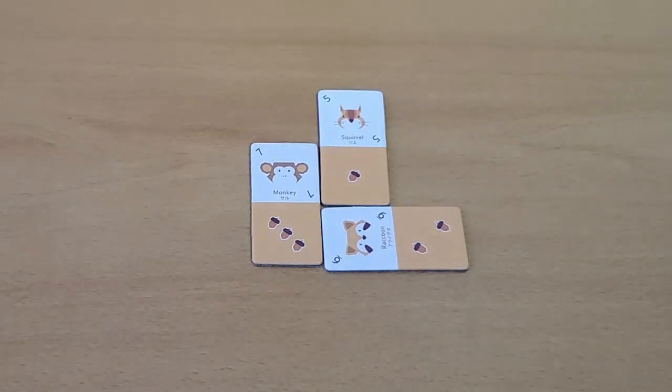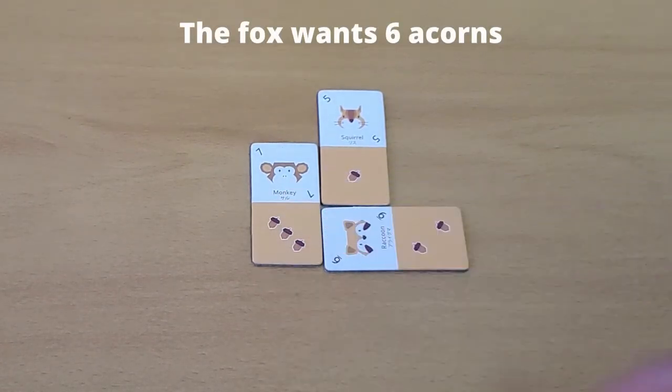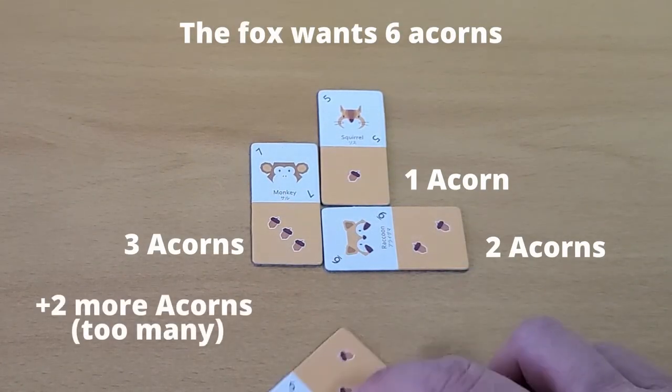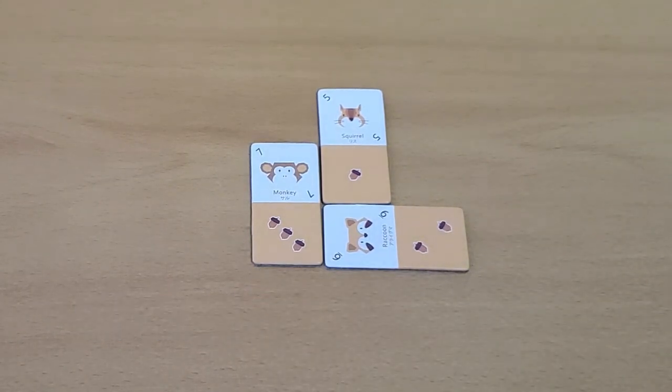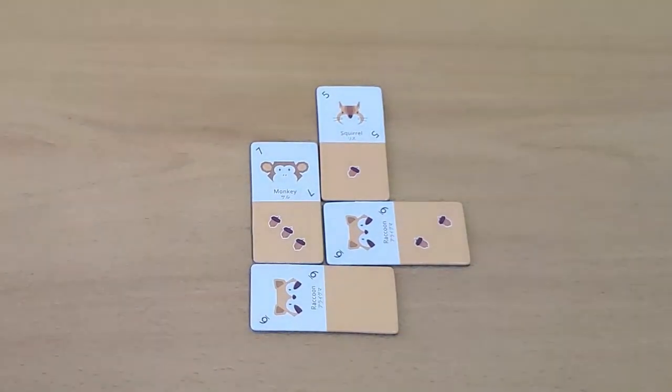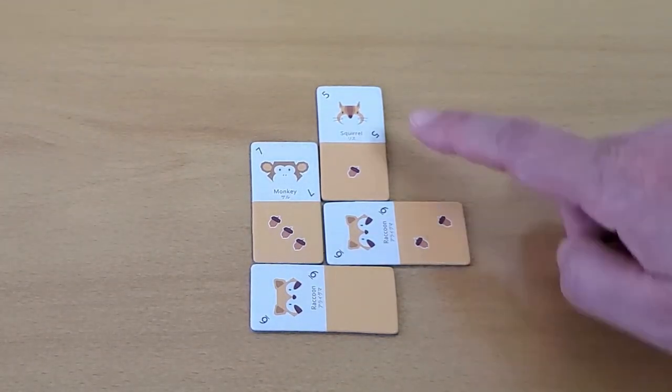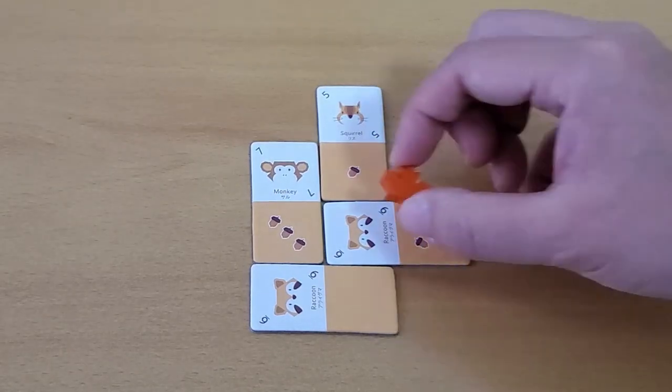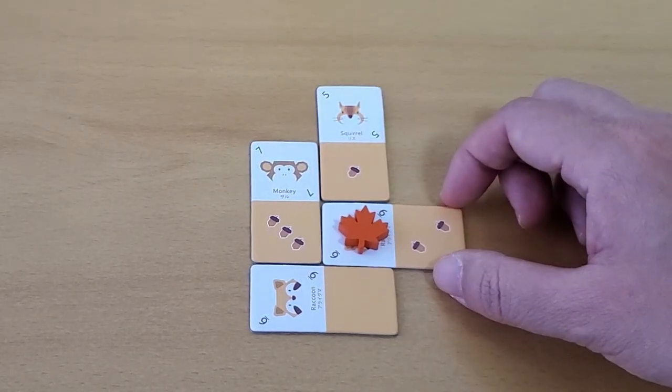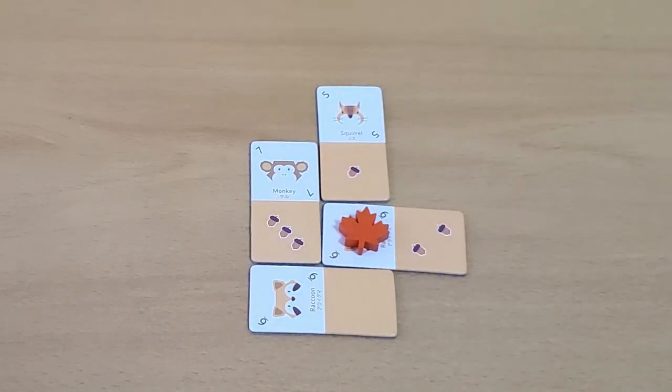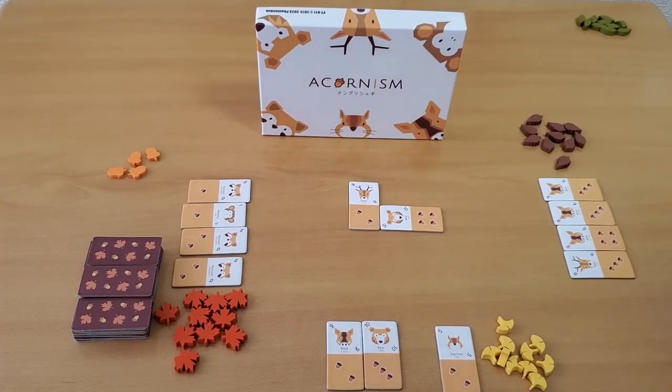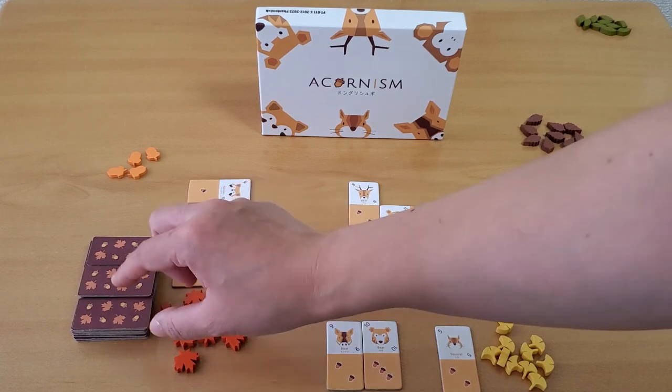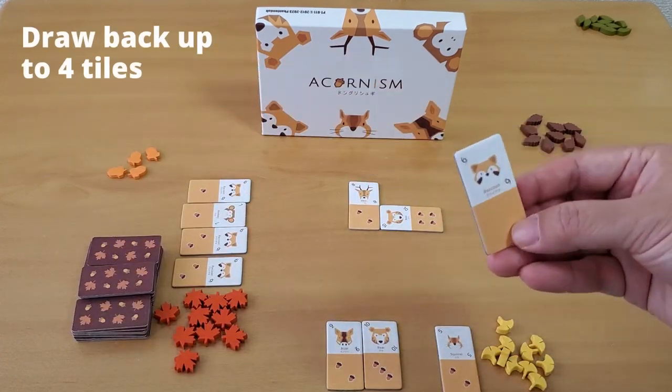In this example, you can't place the tile here because the acorn number exceeds the requirement. In order to place the last tile to surround an animal, it must complete that animal's acorn requirements. If you successfully surround an animal with the exact number of acorns they want, you can place one of your leaf tokens on that animal. Finally, draw a new tile and reveal it.